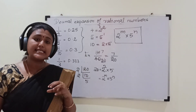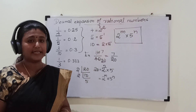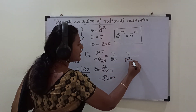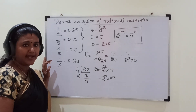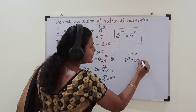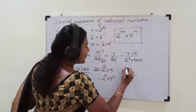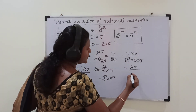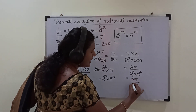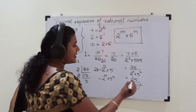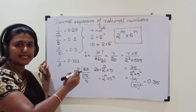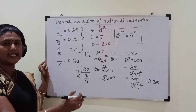Now, after how many decimal places does this rational number terminate? We can find out. We write 20 as 2² × 5. If the denominator is a power of 10, we can easily find the decimal expansion. So we multiply both numerator and denominator by 5, getting 35 / (2² × 5²) = 35/10² = 35/100 = 0.35. So the decimal expansion terminates after 2 decimal places.